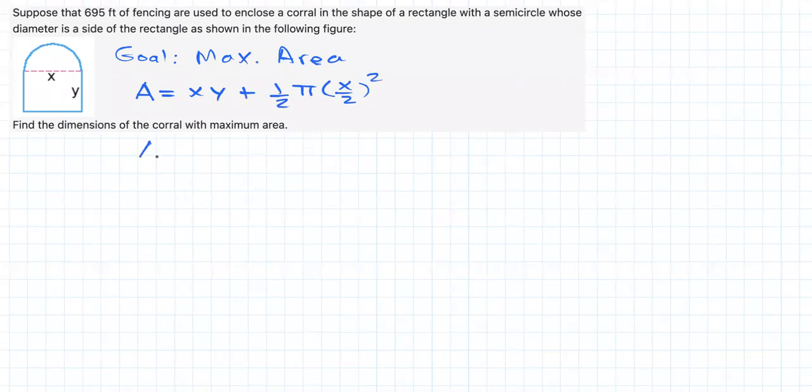Simplifying this, we will see that area is equal to x times y plus pi over 8 x squared, right? Great.